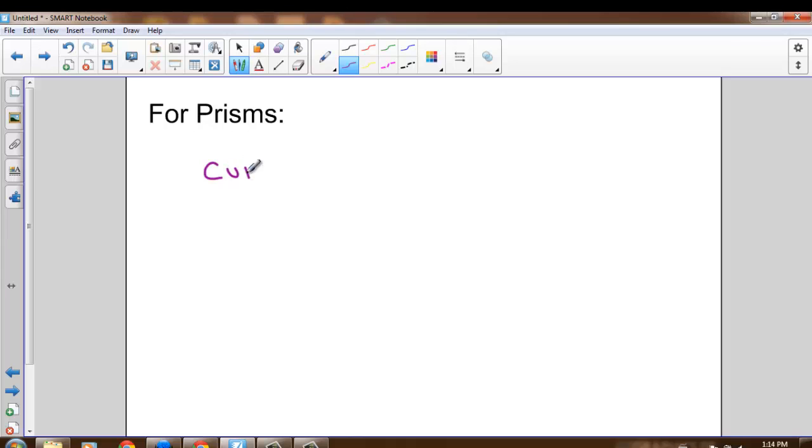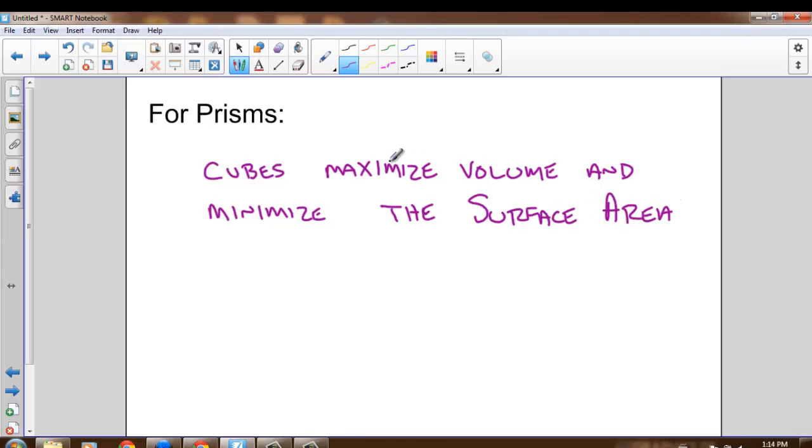For prisms, cubes maximize volume, and they also minimize the surface area, or the amount of material you'd need to make it. If you want to create a prism that has the maximum volume but the least surface area, you should use a cube.